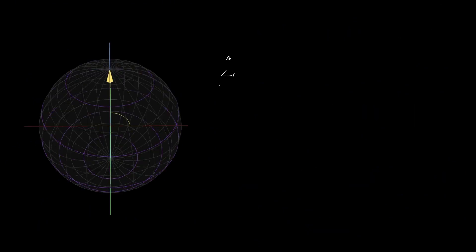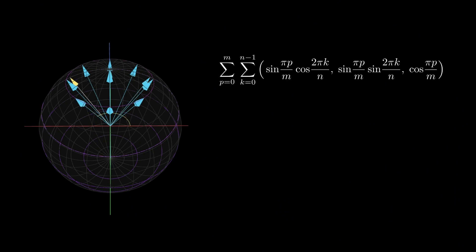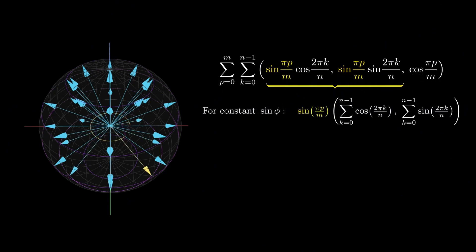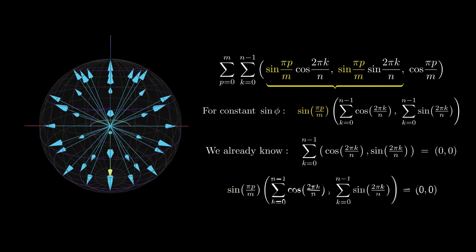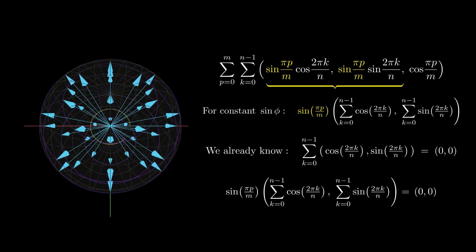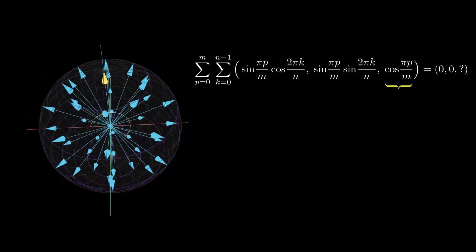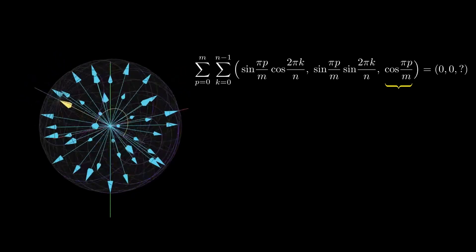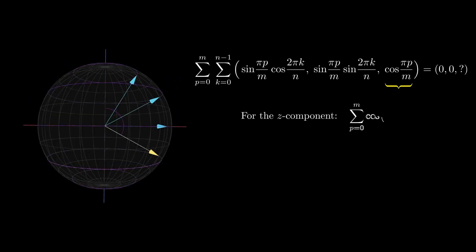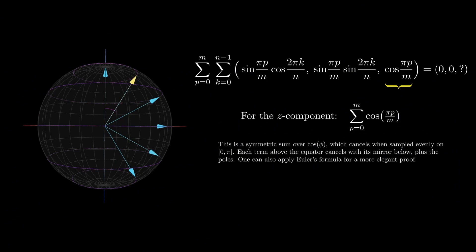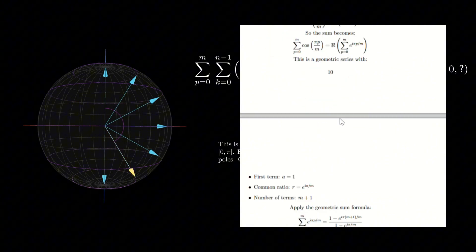Mathematically, this means we can factor out the φ-dependent term (constant sin φ) from the x and y components, and we get the same identity we proved earlier in two dimensions. And we already know that this sum is zero, so the entire xy part vanishes for every ring. To show the z component vanishes, we observe this is a symmetric sum over cos φ, which also cancels out when sampled evenly over the interval 0 to π. Every term above the equator cancels with its mirror below. And we can even apply Euler's formula again for a more elegant proof.